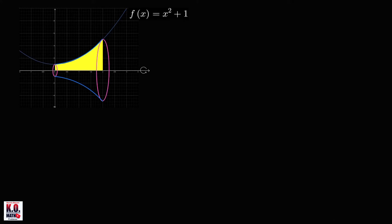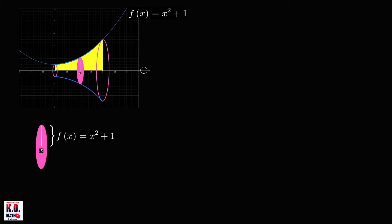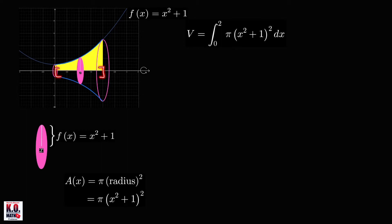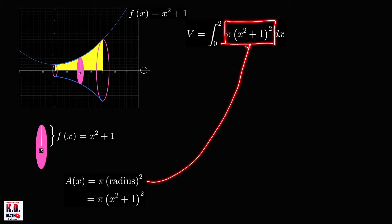We obtain a solid of revolution, and slicing through x gives a cross section perpendicular to the x-axis. The radius of this cross section is f of x, which equals x squared plus 1. The cross sectional area is pi times radius squared, which equals pi times the square of x squared plus 1. Therefore, the volume equals the integral from 0 to 2 of pi times the square of x squared plus 1, dx.